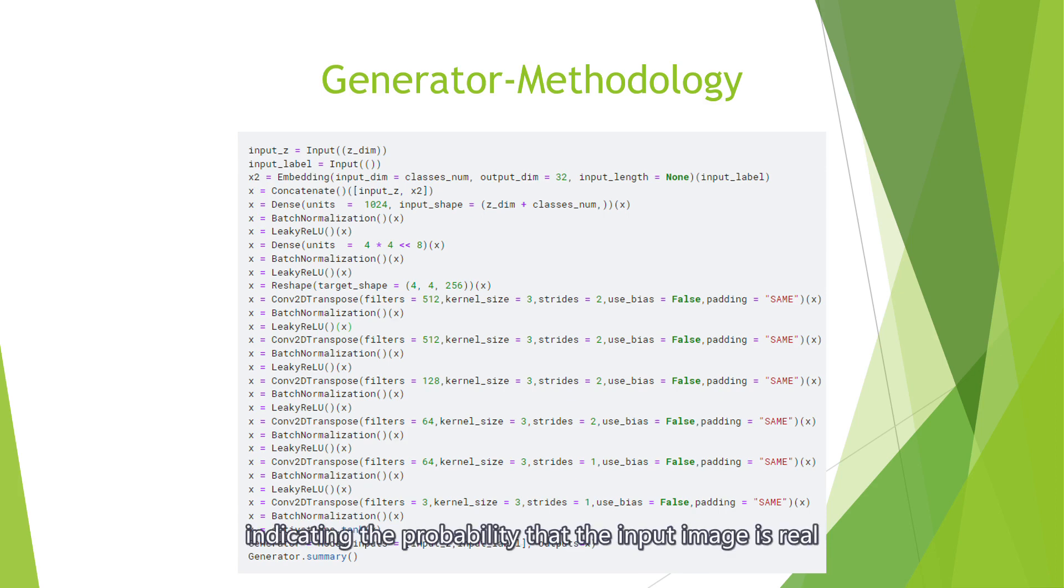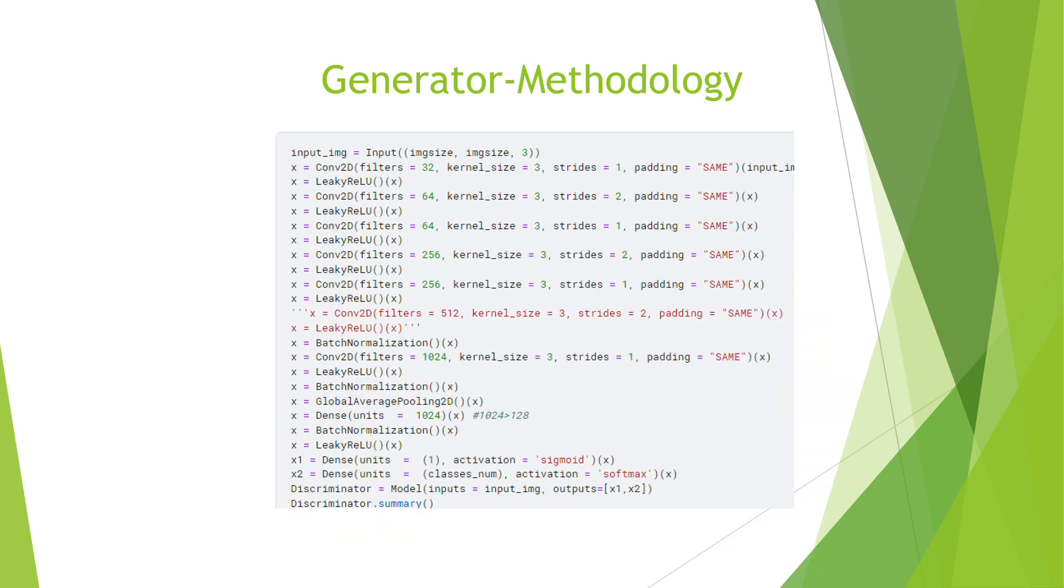This indicates the probability that the input image is real. The optimizer G and optimizer D variables are the TensorFlow optimizers that will be used to update the generator and discriminator during training.